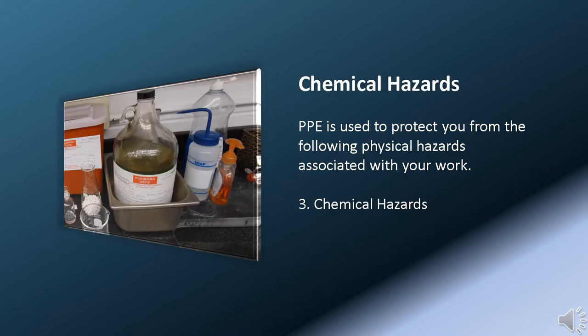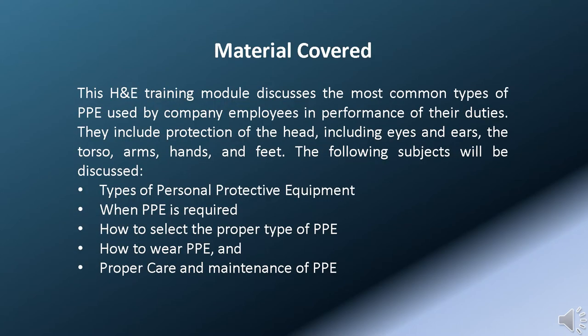Chemical hazards also require protection of the head, including eyes and ears, the torso, arms, hands, and feet. The following subjects will be discussed: types of Personal Protective Equipment, when PPE is required, how to select the proper type of PPE for the job, how to wear PPE, and proper care and maintenance of PPE. Types covered include head protection, eye protection, hearing protection, torso protective clothing, respiratory protection, gloves, and boots.